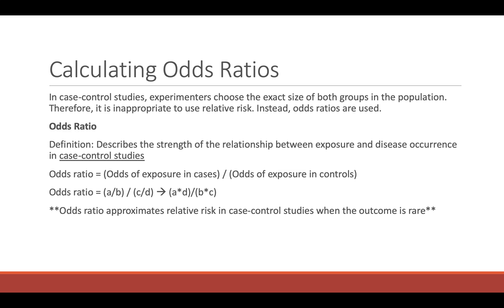Instead, in case control studies we use an odds ratio — the odds of the outcome in patients exposed to one condition versus those not exposed. Since they already have the outcome, we can't look at risk. The odds ratio describes the strength of a relationship between exposure and disease occurrence. The odds ratio equation takes the odds of exposure in cases divided by odds of exposure in controls. An odds ratio approximates relative risk when the outcome is rare; the less rare the outcome, the more the odds ratio will diverge from relative risk.